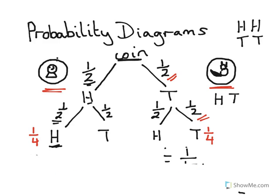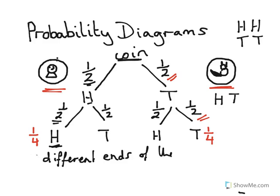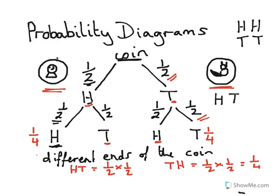What about getting a head and a tail — different sides of the coin? Looking at our tree diagram, there are actually two different ways to get different results. We could have first got a head followed by a tail, or a tail followed by a head. The probability of head-tail is a half times a half, and the probability of tail-head is also a half times a half — both giving us one quarter.